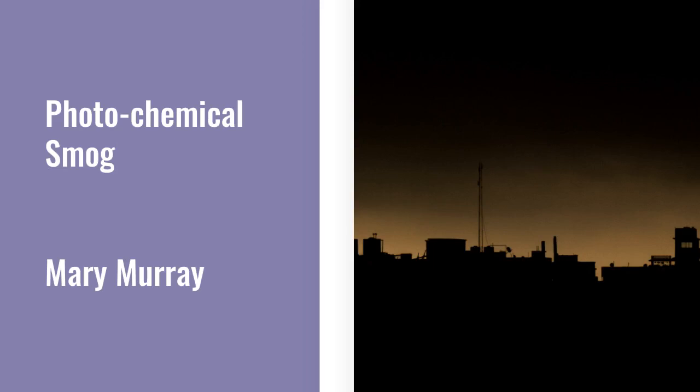Hello everyone, my name is Mary Murray and today I will be talking about the harmful effects of photochemical smog. Photochemical smog is a mixture of pollutants that are formed when nitrogen oxides and volatile organic compounds react to the sunlight, creating a brown haze above cities. It tends to occur more often in the summer because that is when we have the most sunlight.